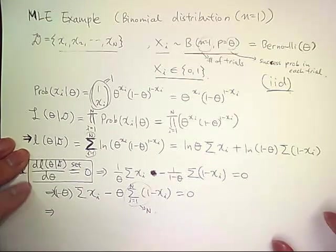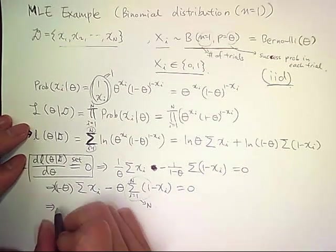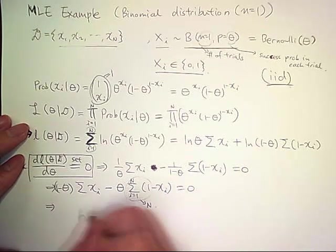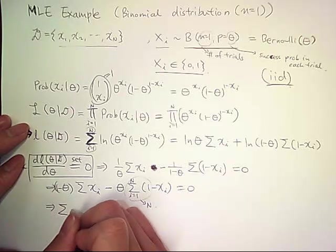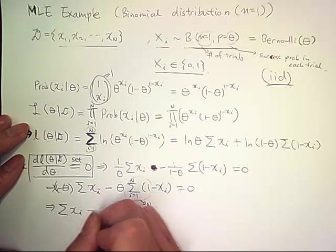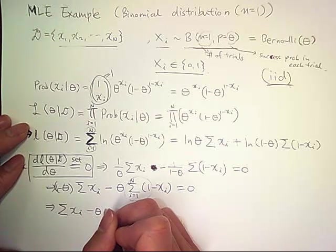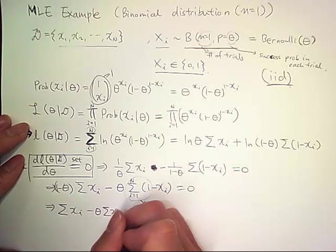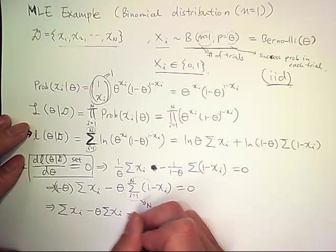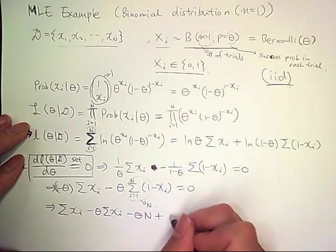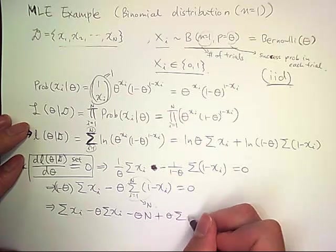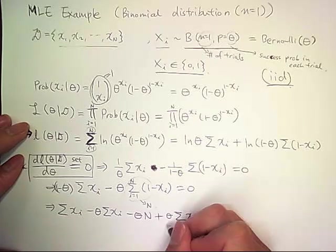So we can rewrite this as sum of x sub i minus theta times x sub i minus theta times n plus theta times sum of x sub i equals zero.